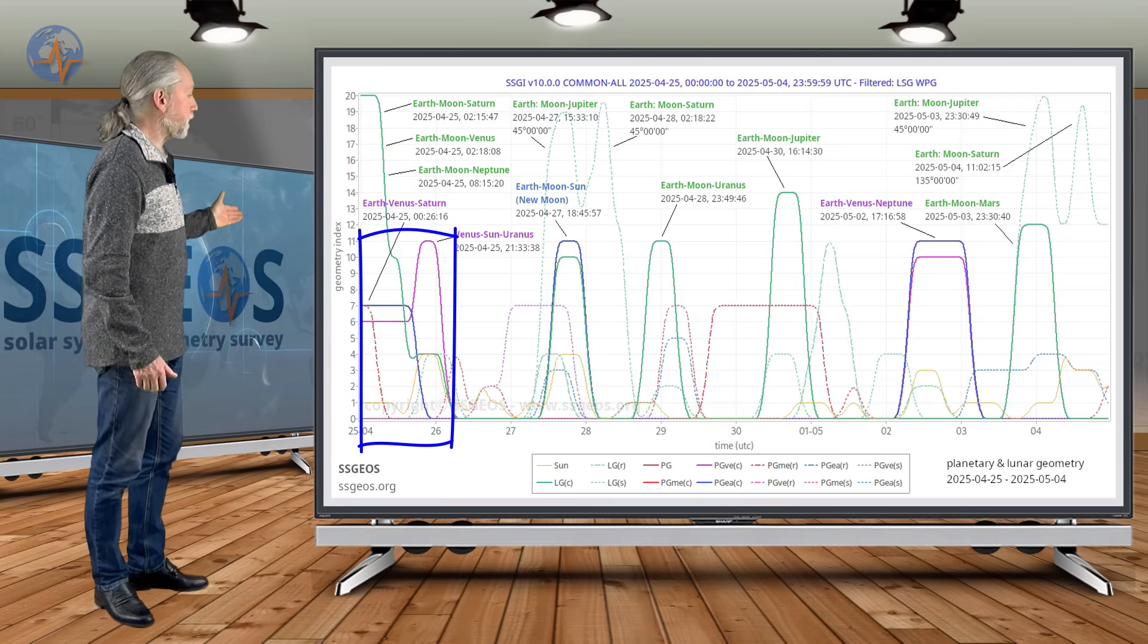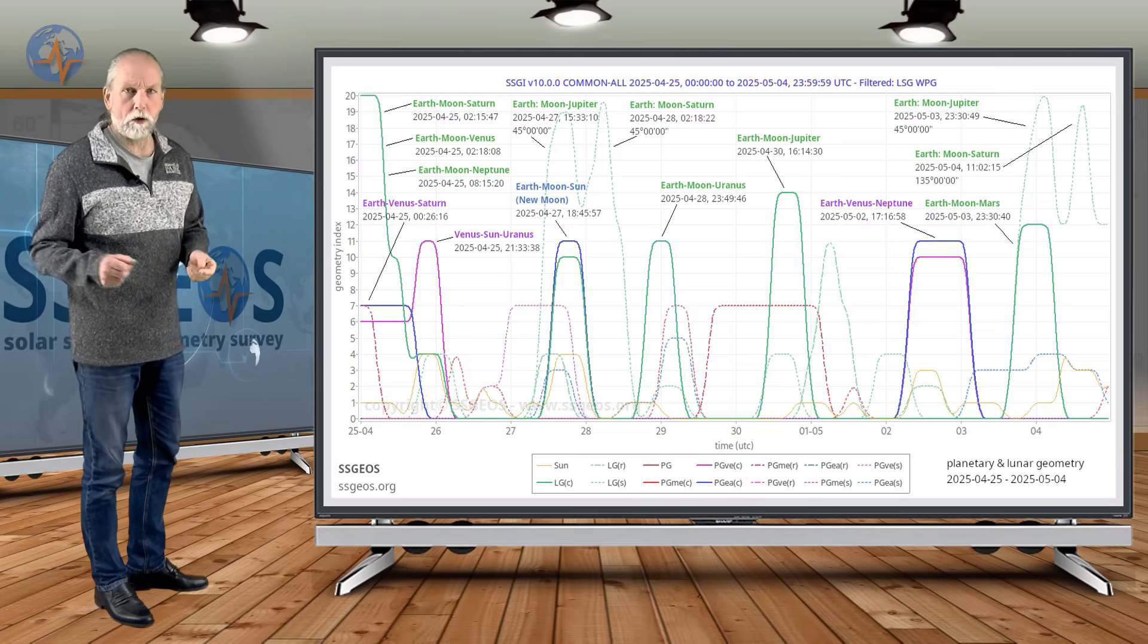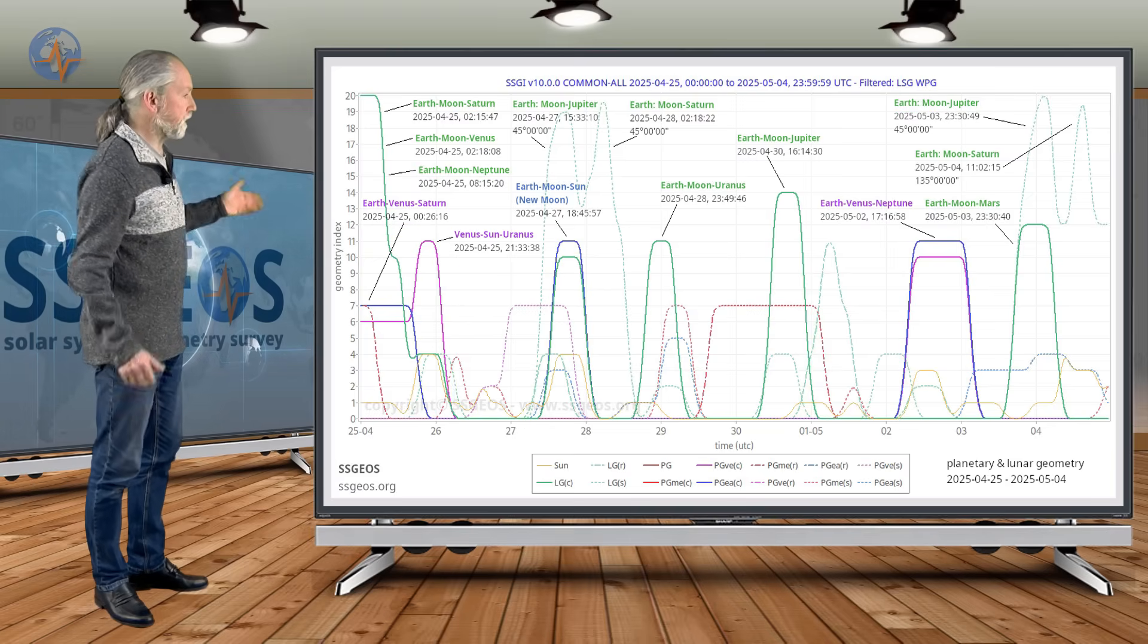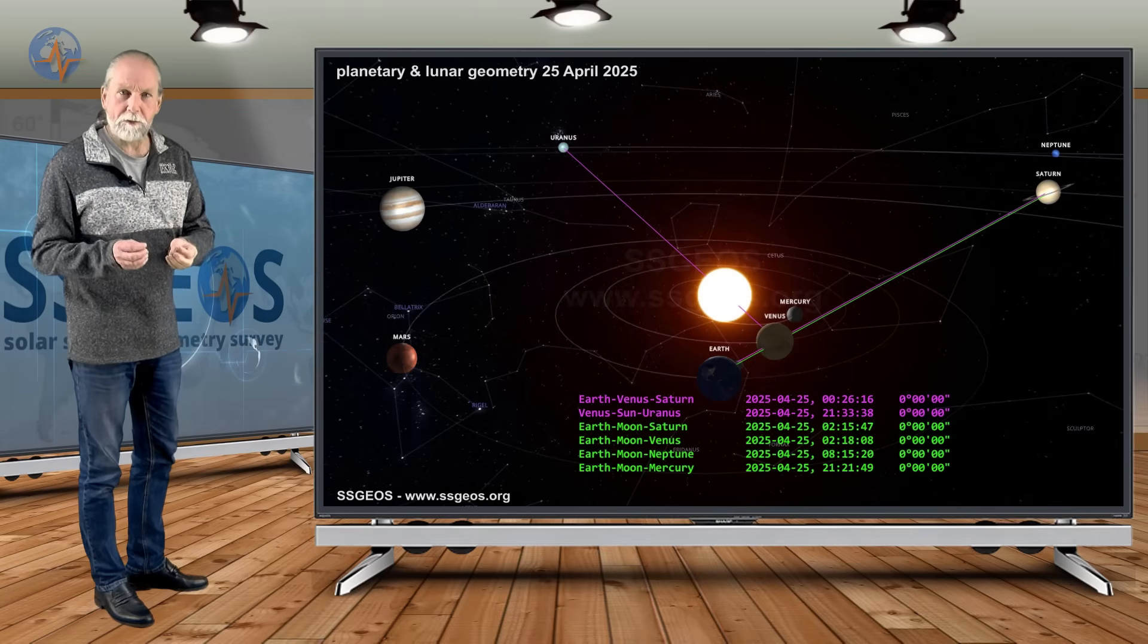And Venus, Sun, Uranus. Earth, Venus, Saturn happens at the same time that we see this high lunar peak, and that is, if you look at the solar system, because of Earth, Venus, and Saturn in a conjunction, the Moon is in between.